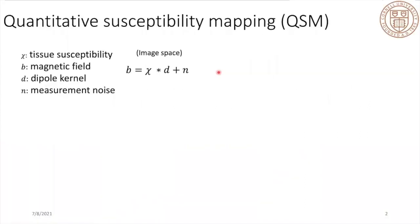Quantitative susceptibility mapping is a biomarker to quantify tissue susceptibility distribution. It's a very ill-posed inverse problem. In this equation, chi is the tissue susceptibility, D is the spatial dipole kernel, and n is measurement noise, and we get the magnetic field b. The problem is to deconvolve the magnetic field to get the tissue susceptibility.